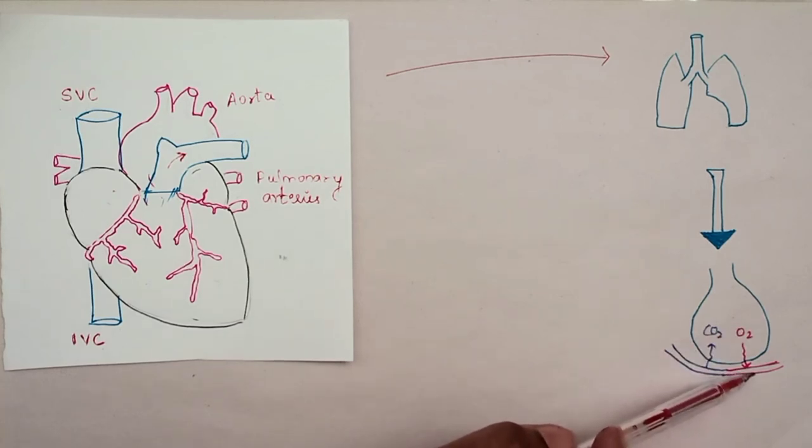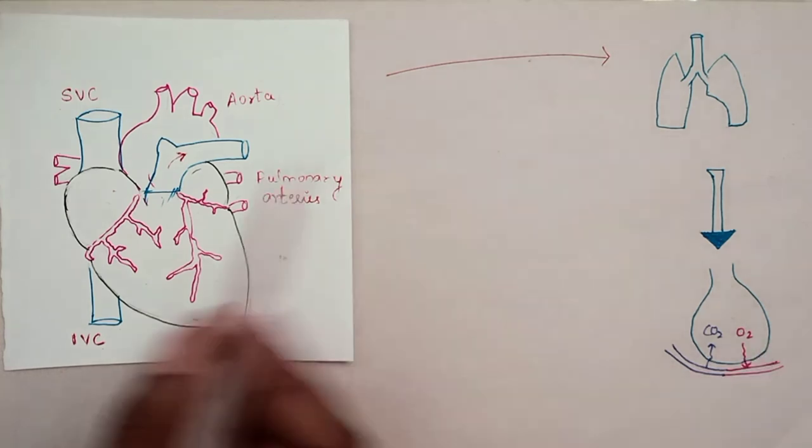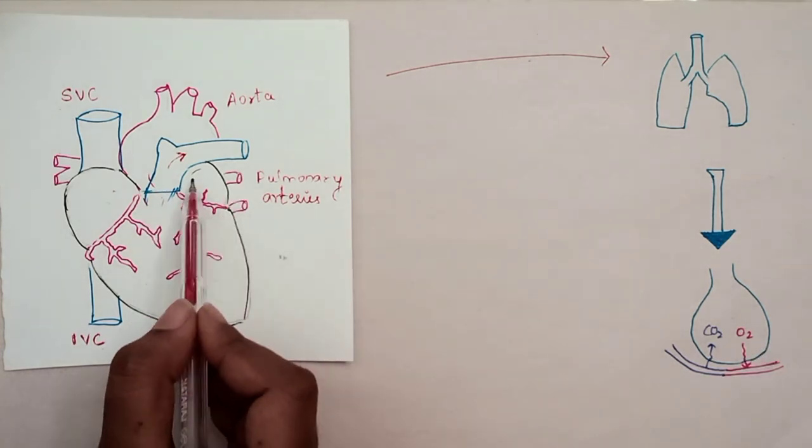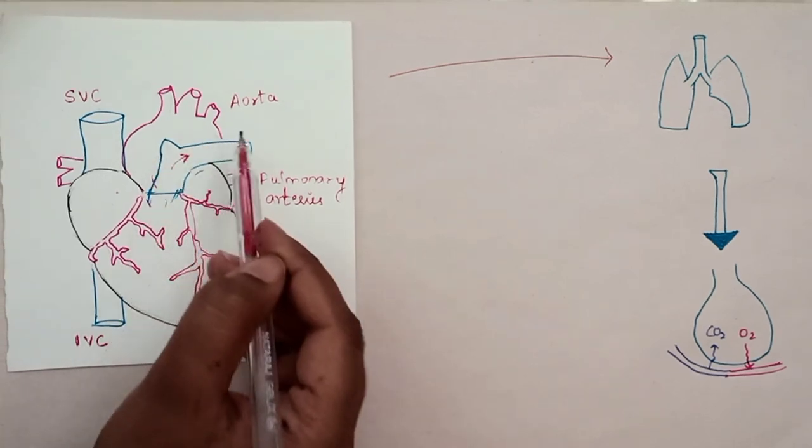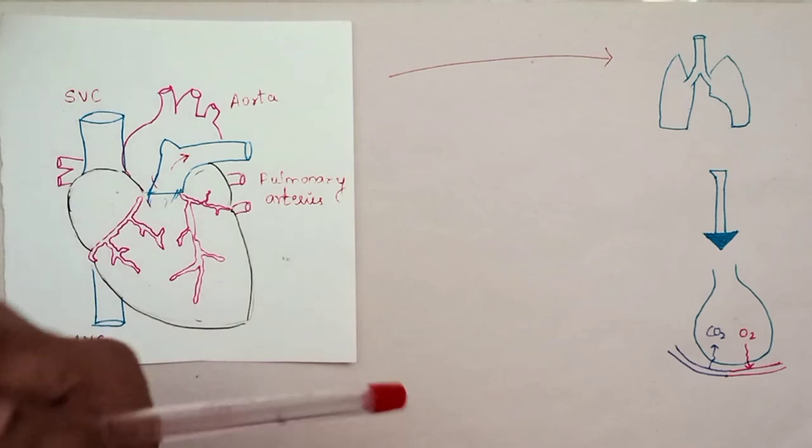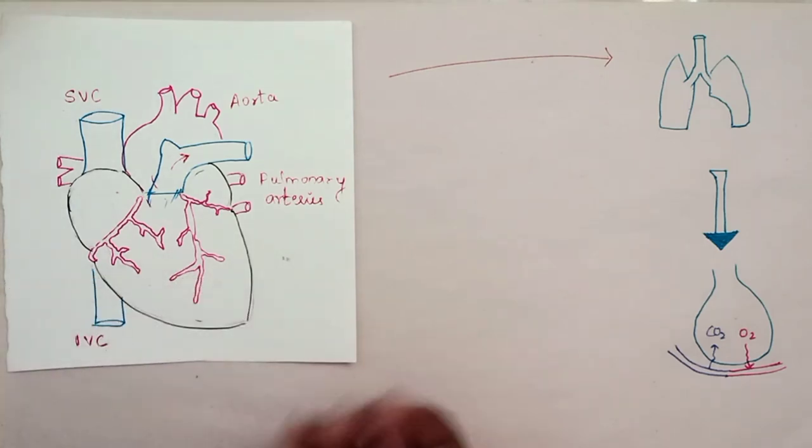The oxygenated blood reaches the pulmonary veins, flows to the left atrium, through the left ventricle, and then to the body to supply oxygen. This is the pulmonary circulation.